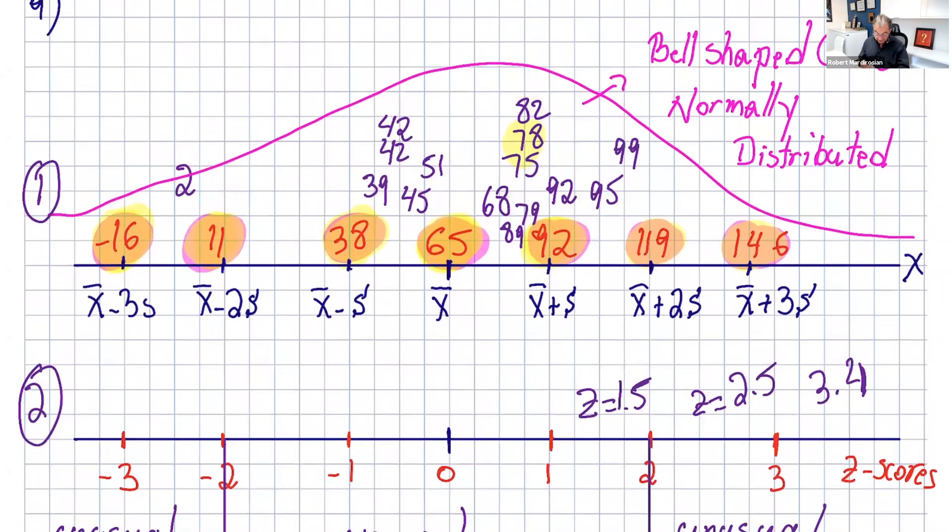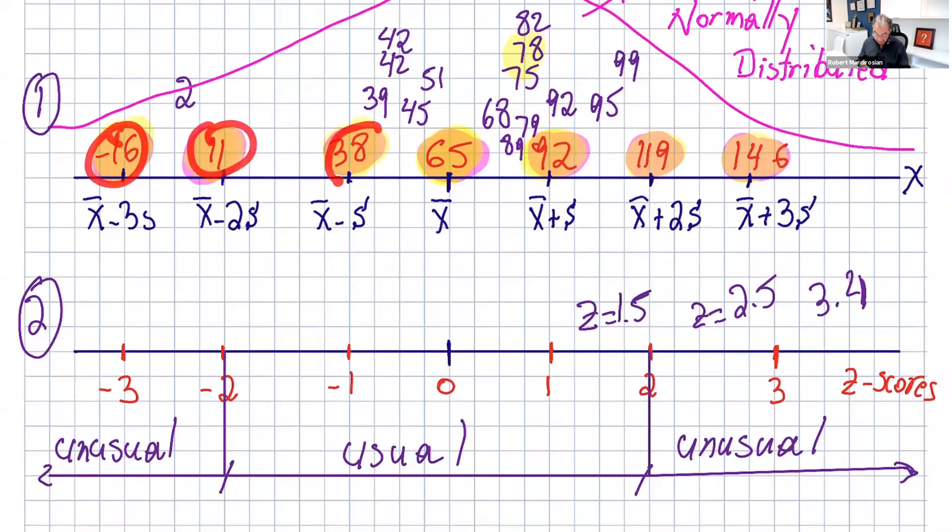What we can do is find the z-scores for these numbers. The z-score for the mean is 0. The z-score for 92 is 1, and so on. Then you get 3, 2, 3, and negative 1, negative 2, negative 3. Instead of having all these numbers, when you calculate the z-scores, you get a nice number line. Any z-score from negative 2 to 2 is usual, any z-score after or before is unusual.